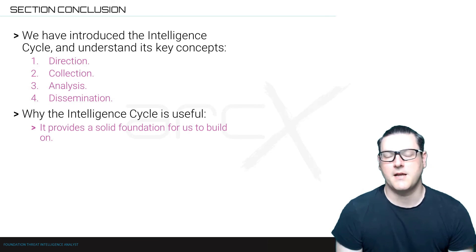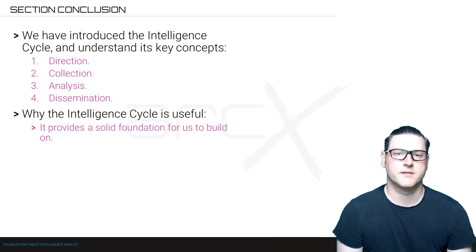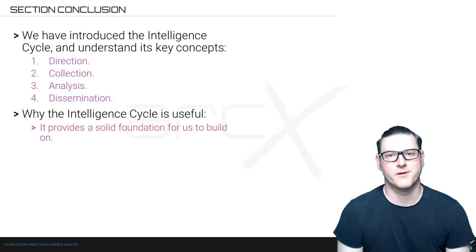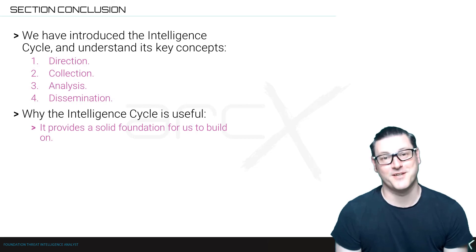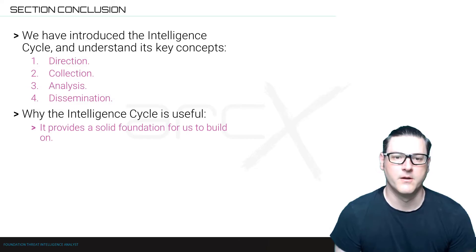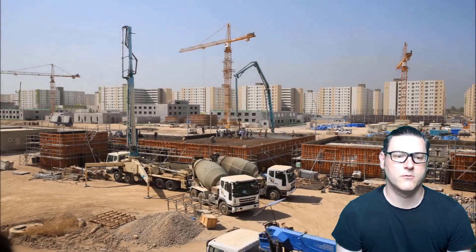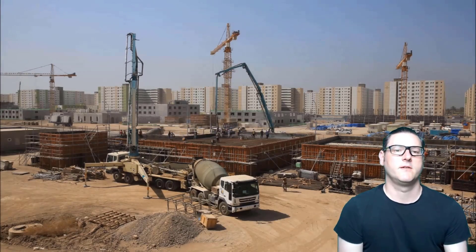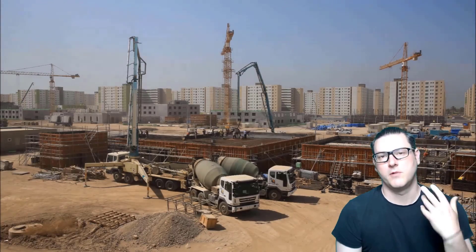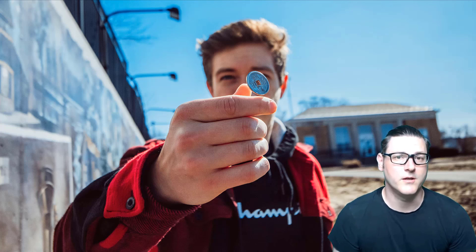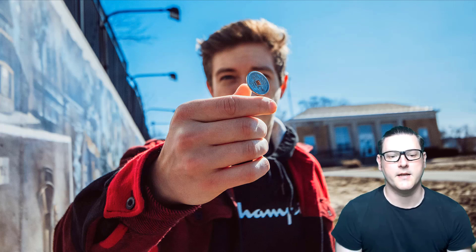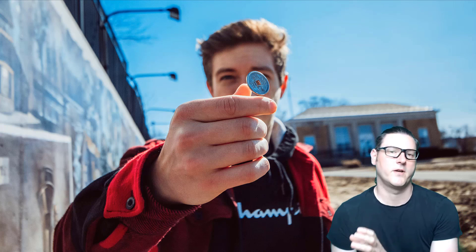This is a short section but it's absolutely pivotal to what we're doing. The intelligence cycle is probably the most important principle we're going to cover during this course. It's broken down into four steps, and if you learn nothing else, learn these: direction, collection, analysis, and dissemination. It provides a solid foundation — a framework — something we can conduct our activities off with focus, momentum, and creativity, rather than just tossing a coin. What we're building here are structures that allow us to do structured analysis and structured investigation.